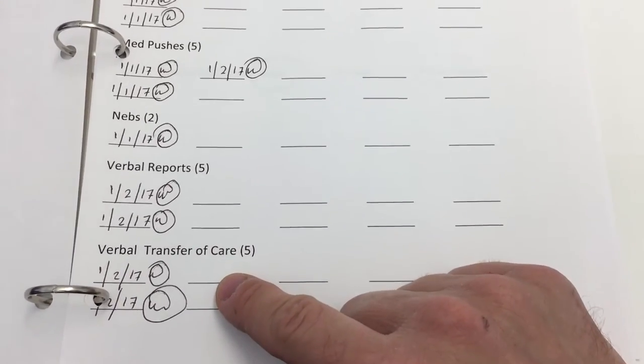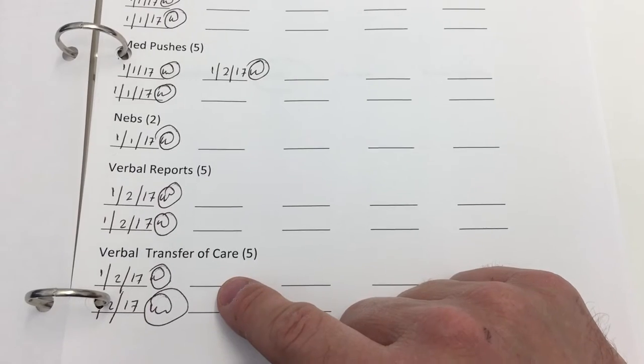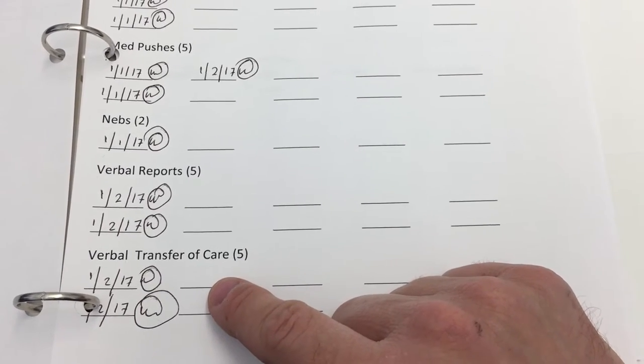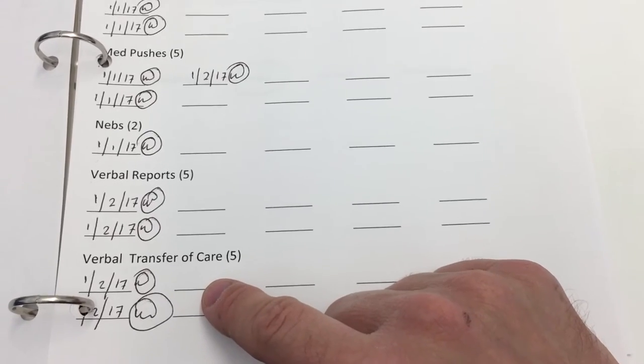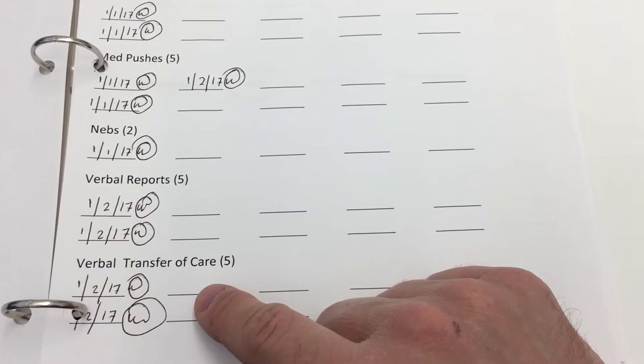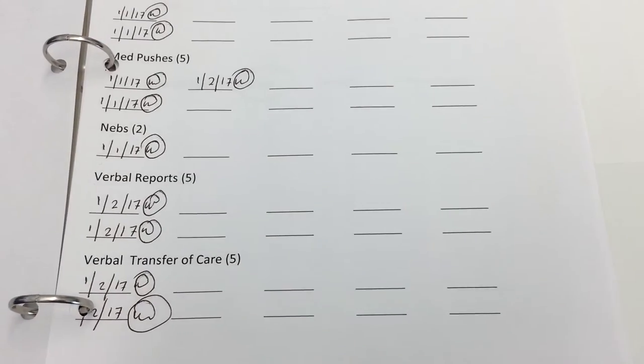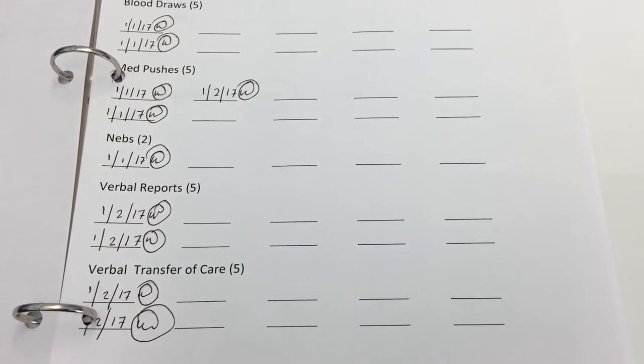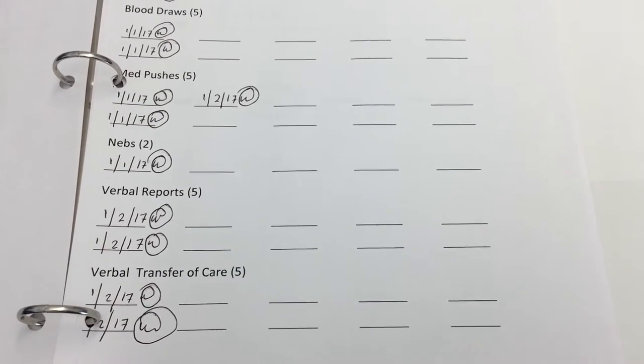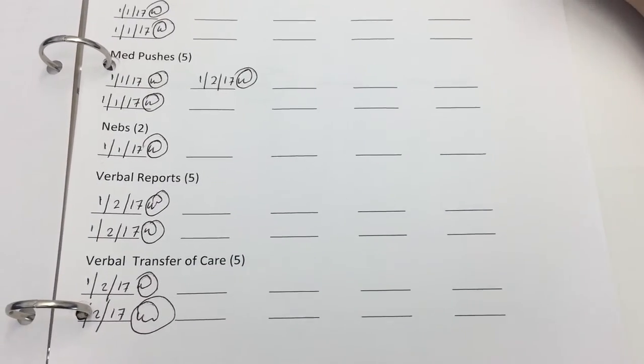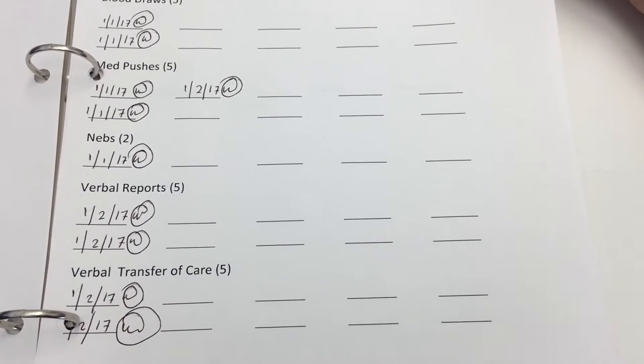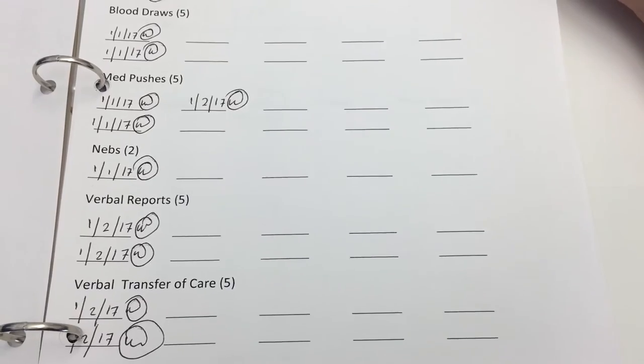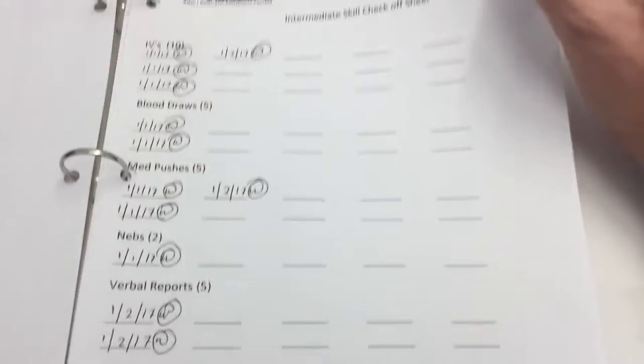This tends to be a radio report. And then five verbal transfer of care. This can either be if you're rotating with Las Cruces fire and you transfer care over to a primary transporting agency like AMR, or you do a bedside report in the emergency room when you transfer care of your patient over to a qualified staff member at the hospital, whatever hospital you may be going into.